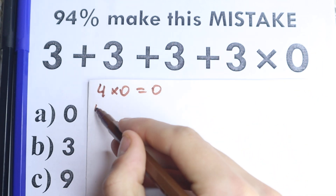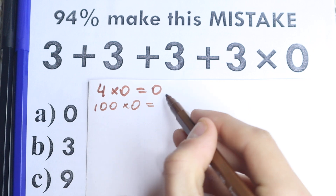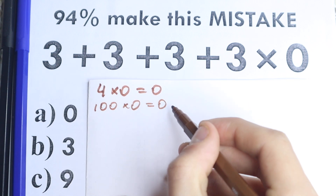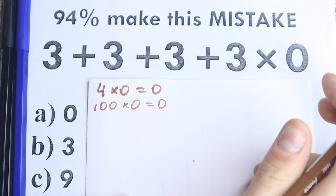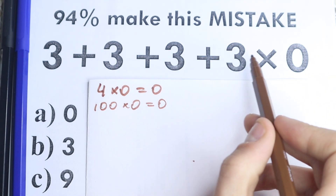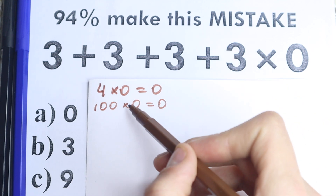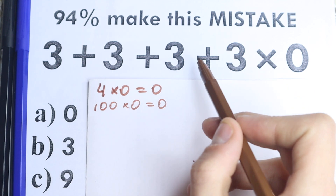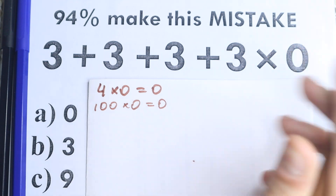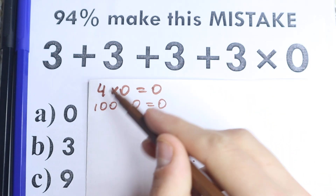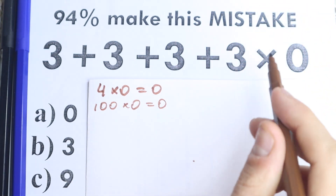A lot of students might think that this entire expression times 0 equals 0. For example, 100 times 0 equals 0. As you can see, many students make this common mistake — they say that multiplication by 0 gives 0, so the whole expression times 0 equals 0, no matter if it's 100, 4, or 25.